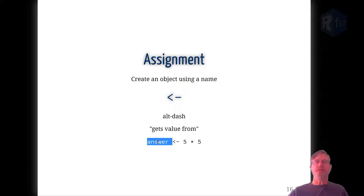And here's an example. If I have the function 5 times 5, for which the answer is 25, and I want that answer to be something I can reference later, I can assign that value of that function to a word called answer. So answer gets value from 5 times 5.